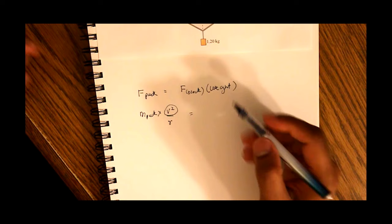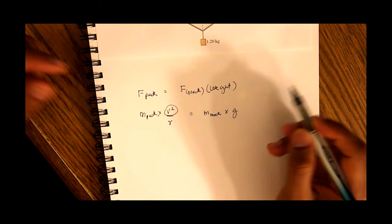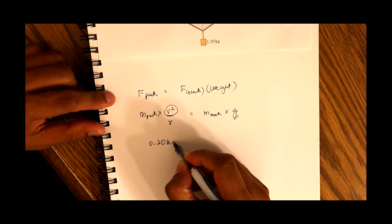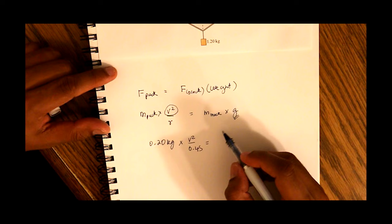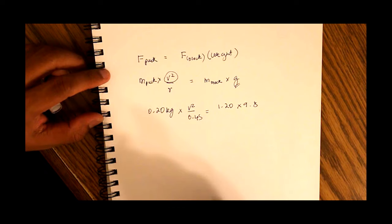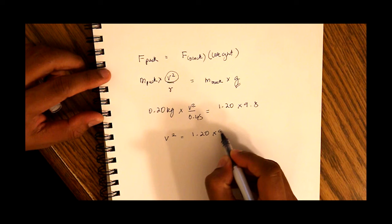Mass of the puck is 0.2 kilograms, v squared over the radius which is given to us as 0.45 equals the mass of the block which is 1.2 times 9.8. So we just rearrange these values, so v squared equals 1.2 times 9.8 times 0.45 divided by 0.20.